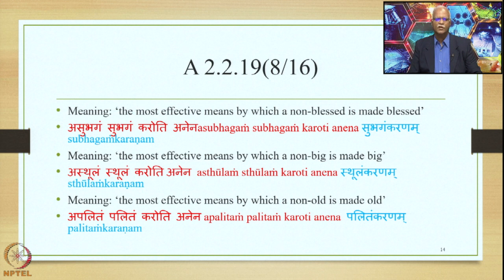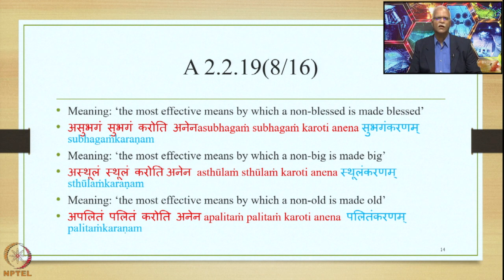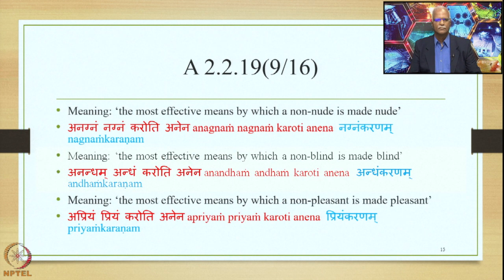The output generated means: the most effective means by which a non-wealthy person is made wealthy — Adhyam Karanam. Similarly, when the meaning is the most effective means by which a non-blessed person is made blessed: Asubhagam Subhagam Karoti Anena, giving output Subhagam Karanam. When the meaning is the most effective means to make a non-nude person nude: Anagnam Nagnam Karoti Anena, giving Nagnam Karanam. When the meaning involves making a non-blind person blind: Anandham Andham Karoti Anena, giving Anandham Karanam. When the meaning involves making a non-pleasant person pleasant, giving Priyam Karanam.